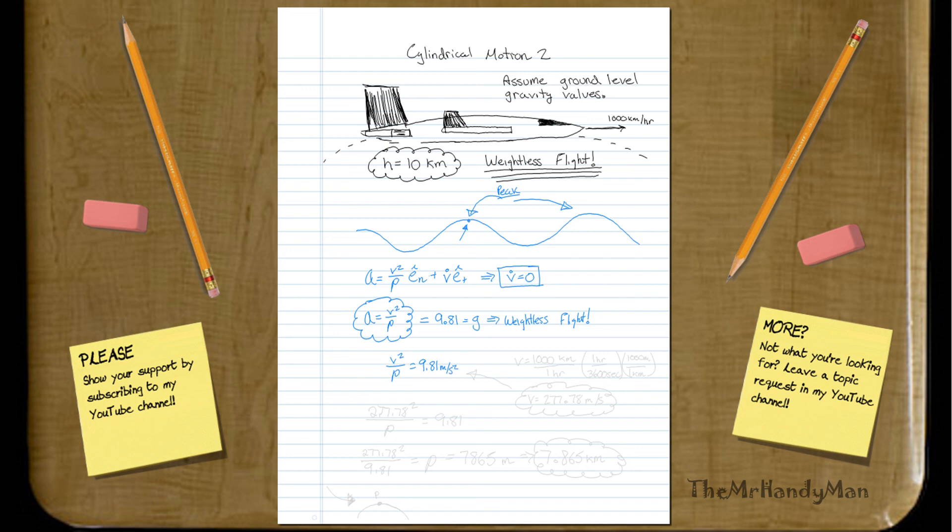We know that V squared all over rho must equal 9.81 meters per second squared. All we have to do is we backtrack this into whatever we would need. First of all, what is the V? Well, V is equal to 1,000 kilometers per one hour. We can just break this down for us. 1 hour is 3,600 seconds, and 1 kilometer is 1,000 meters. When you work out the math, you're going to get V will equal 277.78 meters a second.